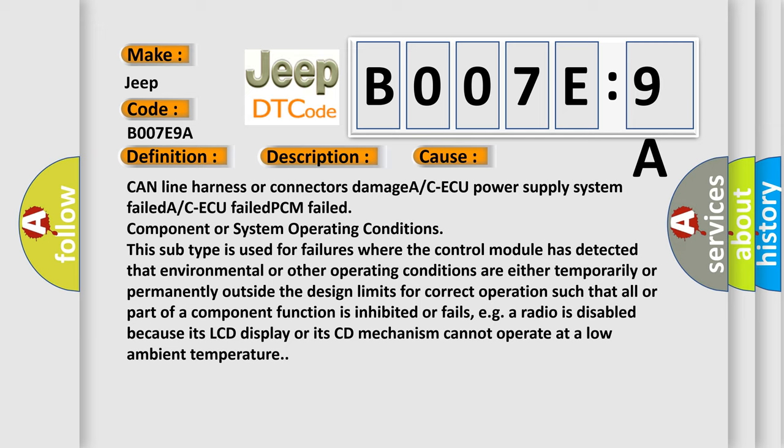This subtype is used for failures where the control module has detected that environmental or other operating conditions are either temporarily or permanently outside the design limits for correct operation, such that all or part of a component function is inhibited or fails. For example, a radio is disabled because its LCD display or its CD mechanism cannot operate at a low ambient temperature.